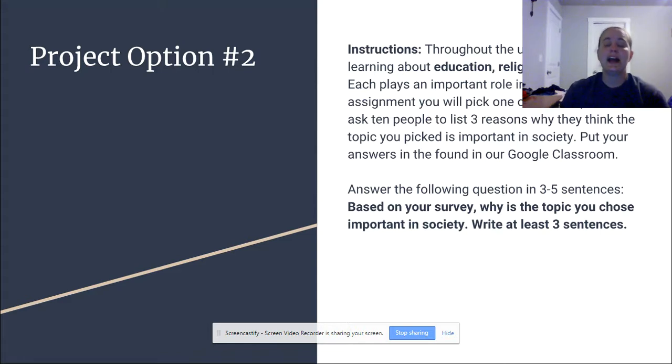So it's really an eye-opening experience. After you've gathered all of your data and you've put it in that chart, you're going to answer a short essay question. It only needs to be three to five sentences. And the question is, based on your survey, why is the topic you chose important in society? So if you chose religion, you're going to go through what people had to say about religion, their top three reasons why it's important in society. You're going to break it down and review it. And then you're going to summarize that all up in your own words and write three sentences. Religion is important in society because, or based off my research, religion is important in society because.